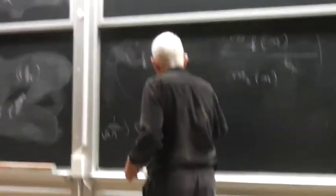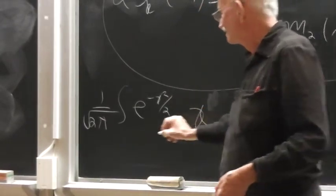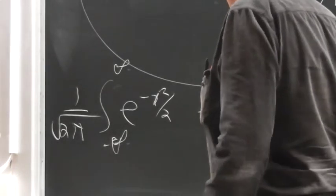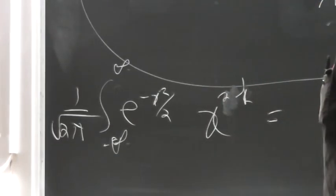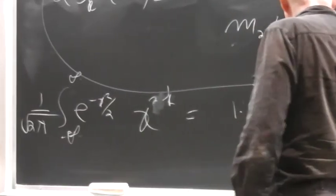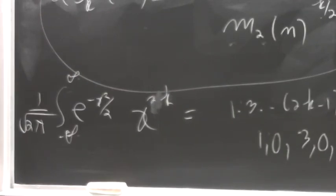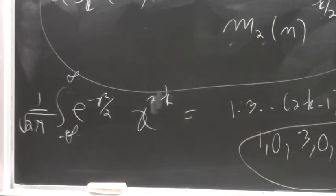I'm reminding you of the moments of the Gaussian distribution. Famously, if it's odd, of course it's zero by symmetry. That is the moment of the so-called Gaussian distribution. If it's even, it is 1 times 3 times 5, etc. So the sequence of moments is 1, 0, 3, 0, 15, 0, 105. This is the sequence of moments of the Gaussian or normal distribution.